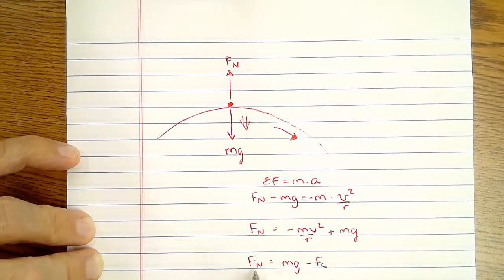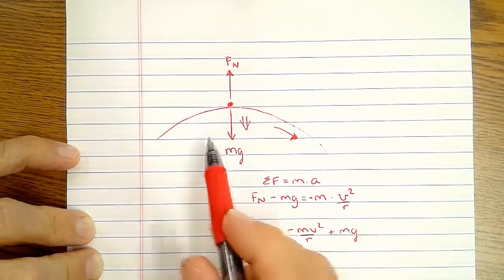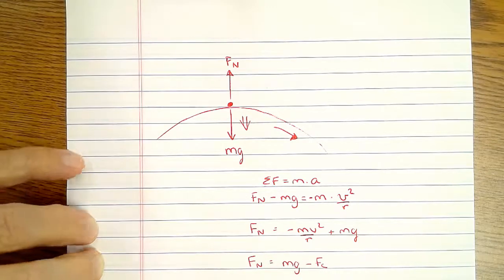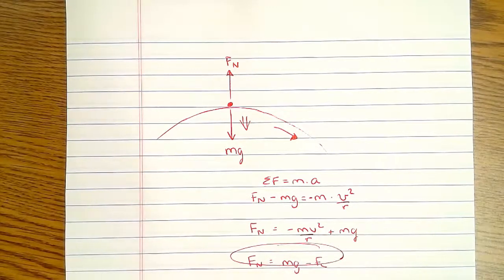The normal force is less than your weight because some of the force of gravity pulling on you is used up making you move in a circle. Your normal force is almost your weight, but it's a little bit less. That's how you solve that problem.